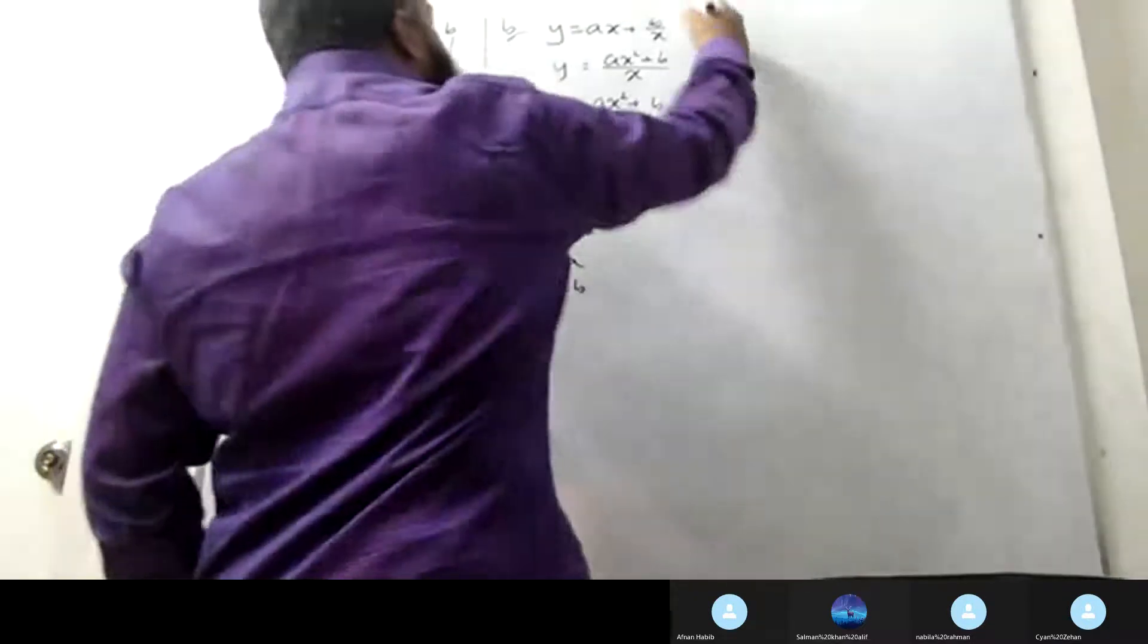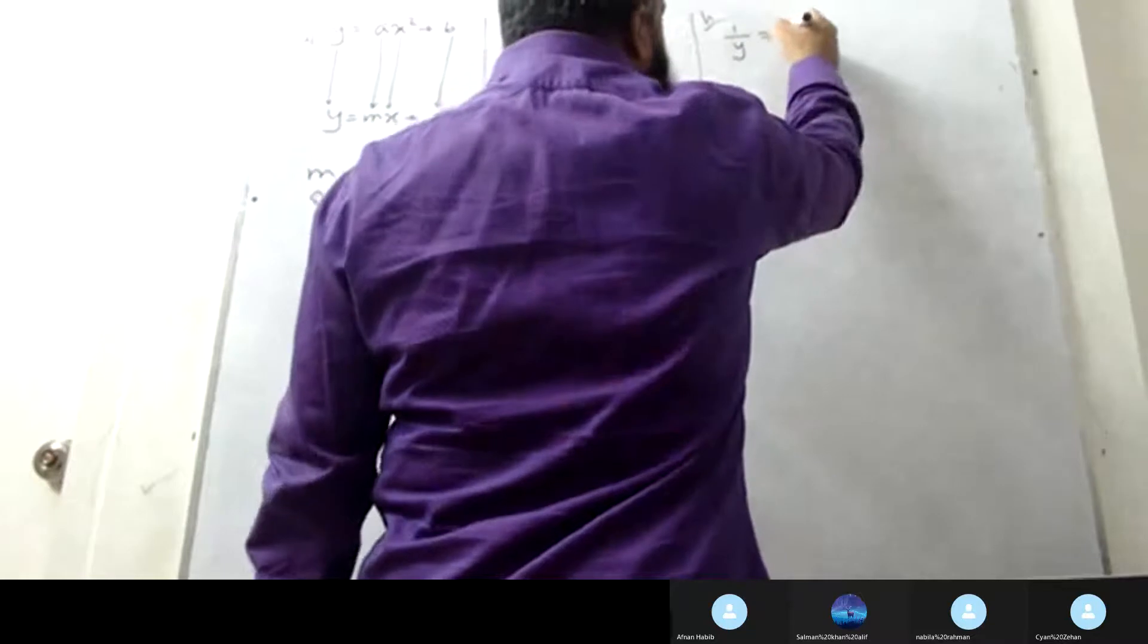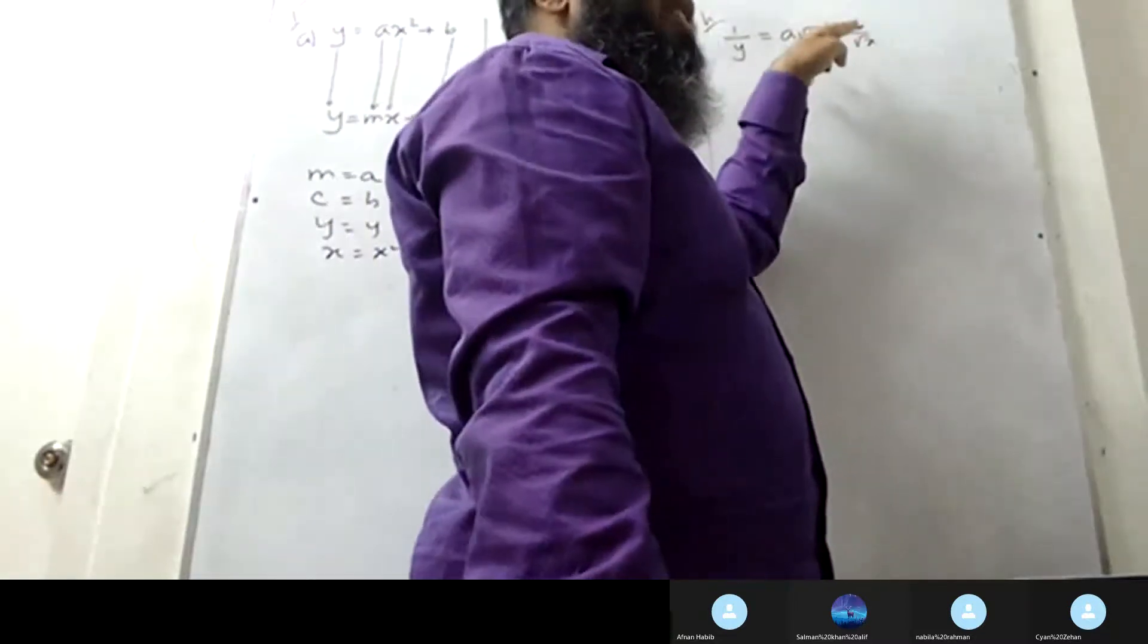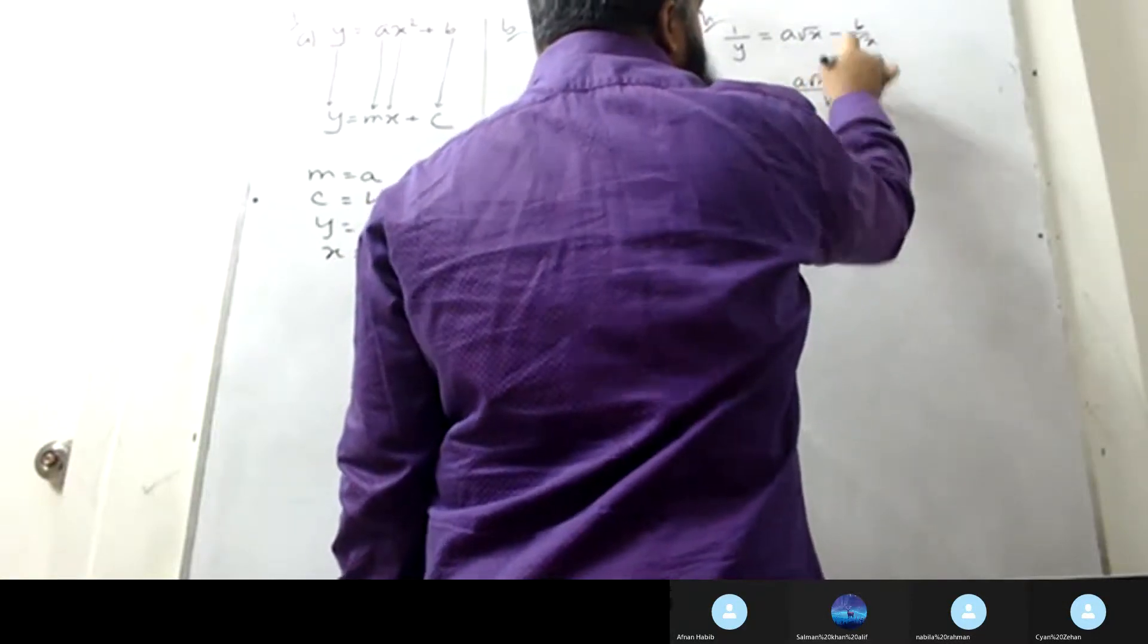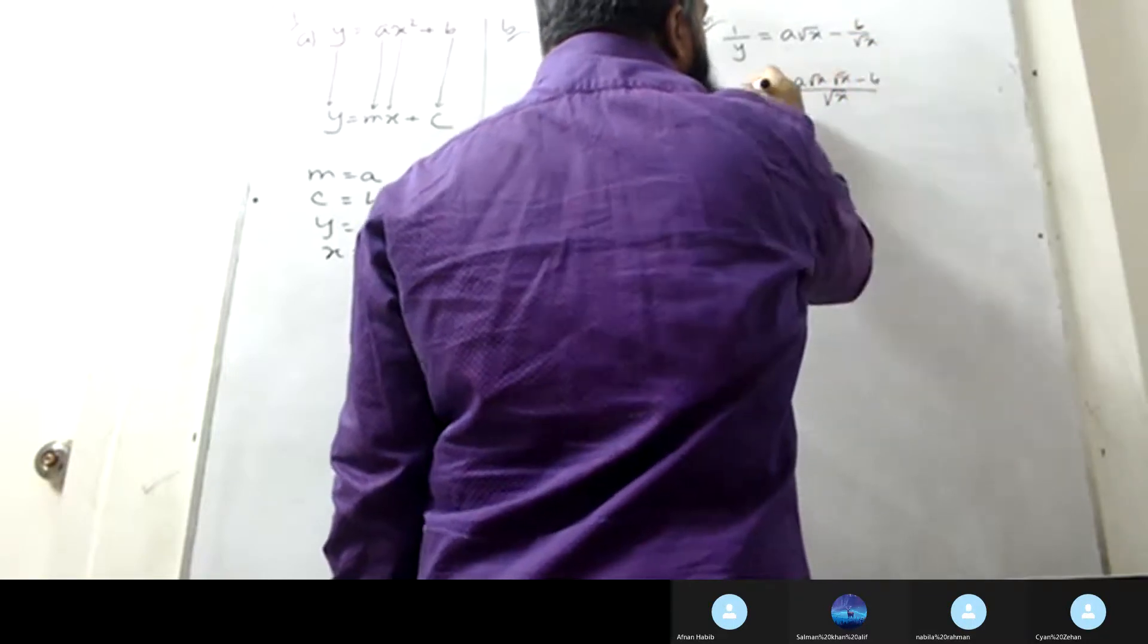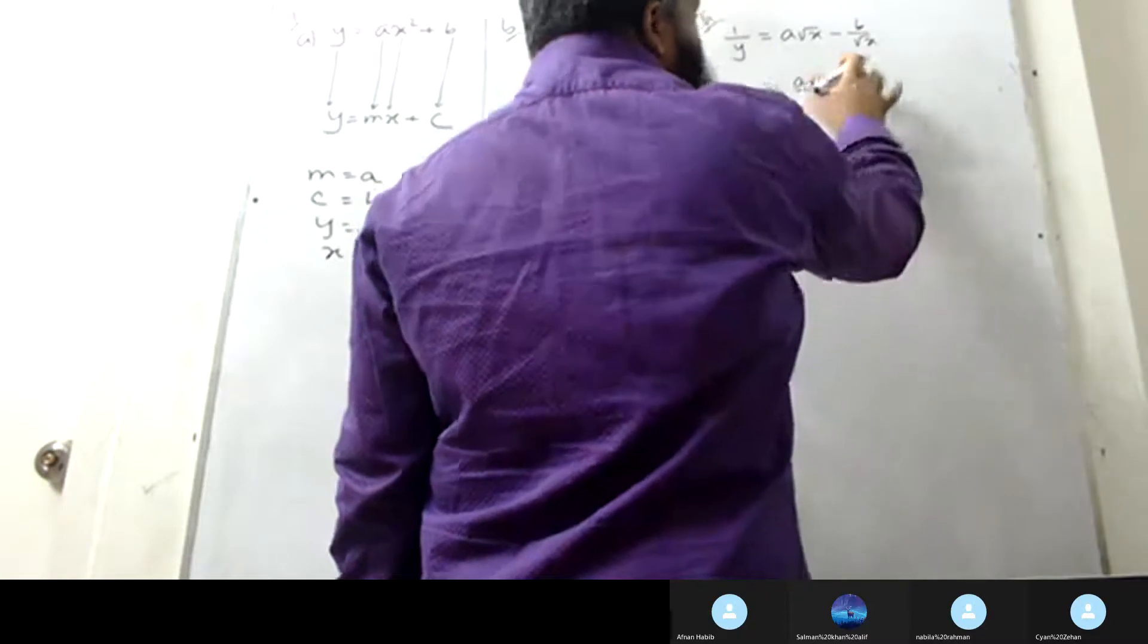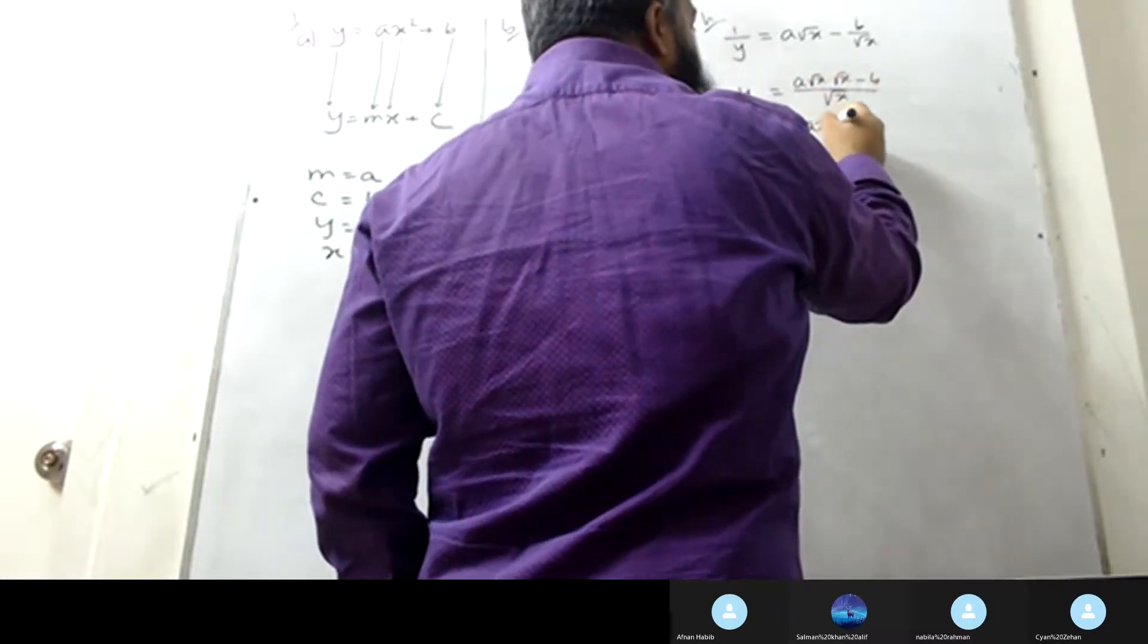Next question: one by y equals a root over x minus b by root over x. To convert to y equals mx plus c format, multiply both sides by root over x. Cross multiplying, y into root over x equals root over x into root over x, which is x. So we get ax minus b.